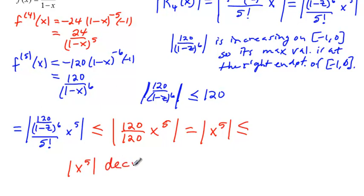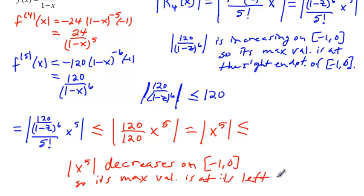So, you could say this decreases on the interval from negative 1 to 0. So, it's maximum value is at its left end point. So, in this case, we can say that this will be on this interval less than or equal to putting negative 1 in there, we're going to end up with a 1.